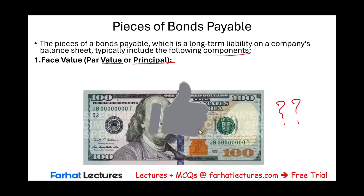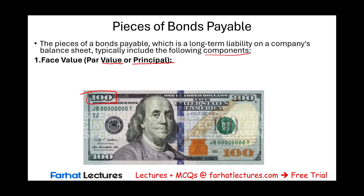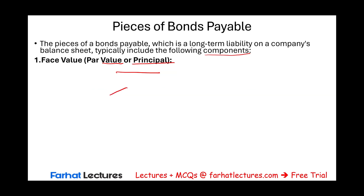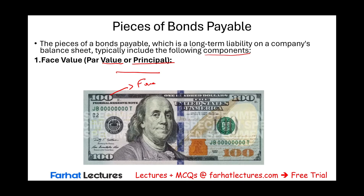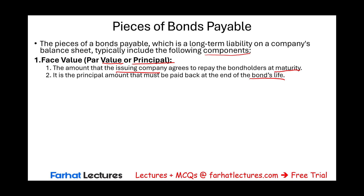The face value, par value, or principal amount is paid at maturity — when the bond matures and the debt is over. The company must pay back the face value at the end of the bond's life. Also on the bond is the coupon rate, sometimes called the stated rate, contract rate, or printed rate. This rate is permanent and does not change. It is the annual interest rate paid on the bond's face value. For example, if the company wants to borrow $1 million and pays 8%, that is the coupon rate.